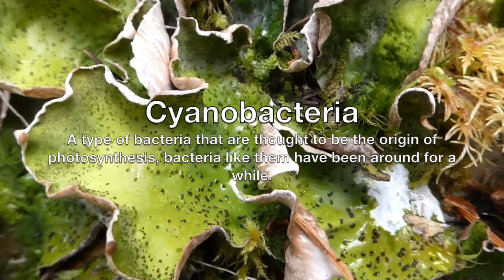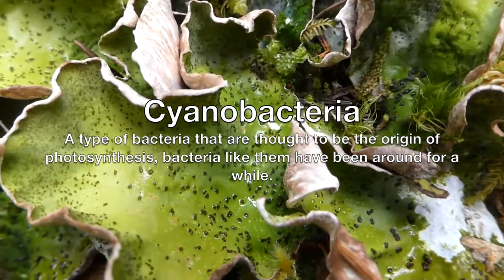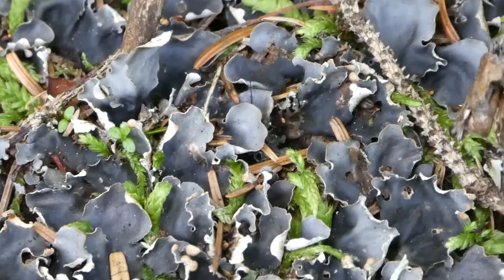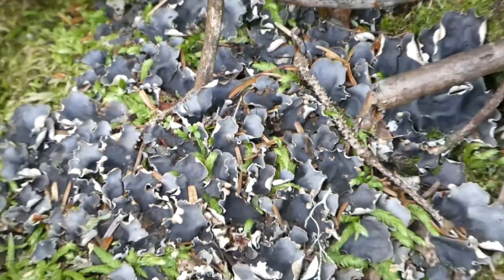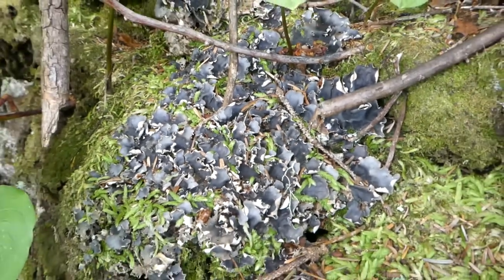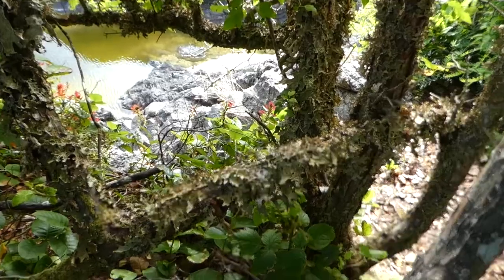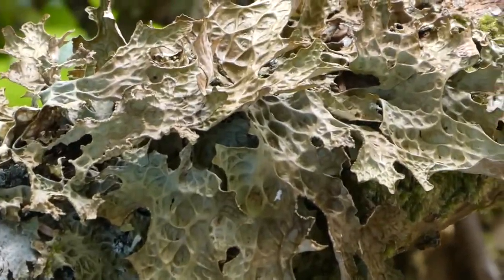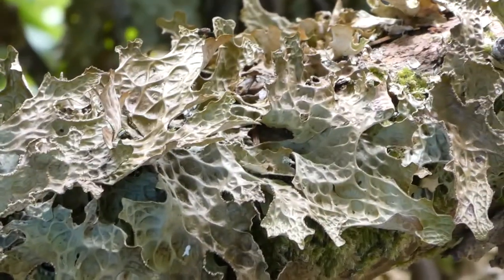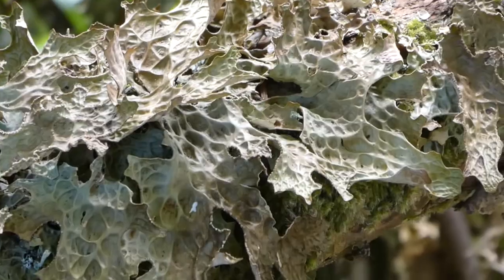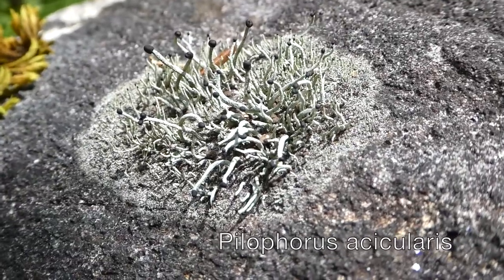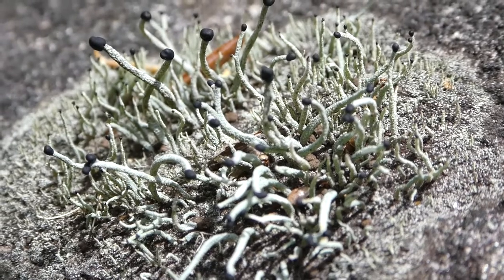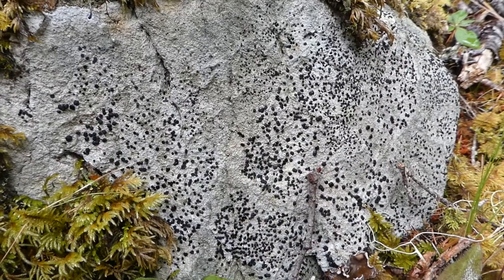What are cyanobacteria? Cyanobacteria are a type of bacteria that are likely the origin of photosynthesis, so bacteria like them have been around for a while. You may know cyanobacteria as blue-green algae in the context of their pesky presence in freshwater swimming lakes. They're called blue-green algae due to their coloration, but this is a misleading title — they're not actually algae, they're bacteria.